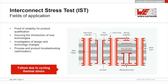Through the interconnect stress test, those issues can be identified. On the right side there is an overview of possible failures that can happen in IST coupons — a broad overview of the different failure types, each with an underlying failure mechanism.